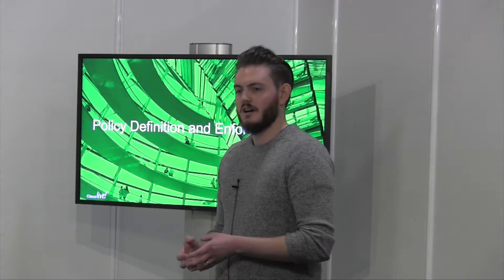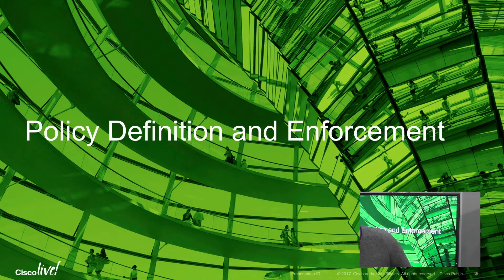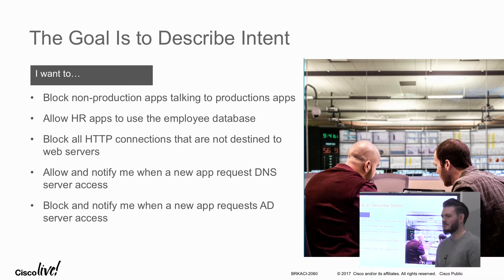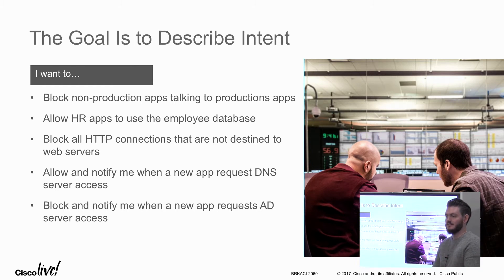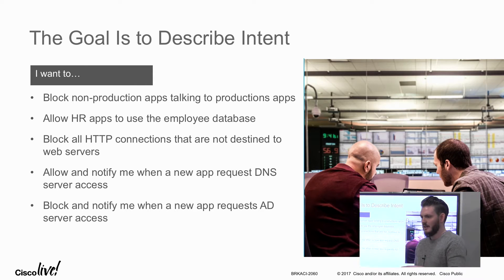Now that you have these scopes and the application map, you want to take action with that insight — so we can define policy as intent. For example, you might want to stop anything non-production from talking to production without specifying subnets; Tetration dynamically works out which IP addresses have the production tag. Or you might say only anything inside the HR scope tree can access the employee database. When you describe policy this way, you no longer have to rely on information encoded as it passes through the network — you can use annotations and higher-level information to describe your policy.